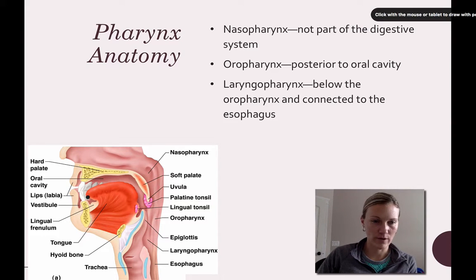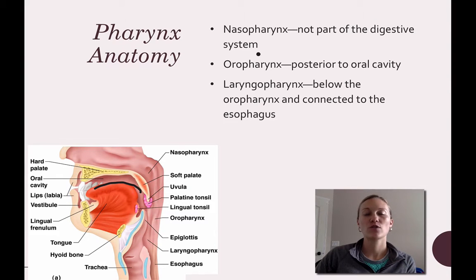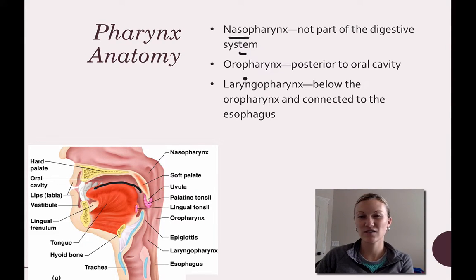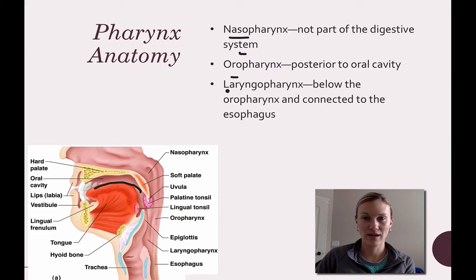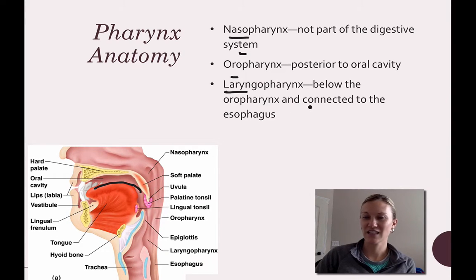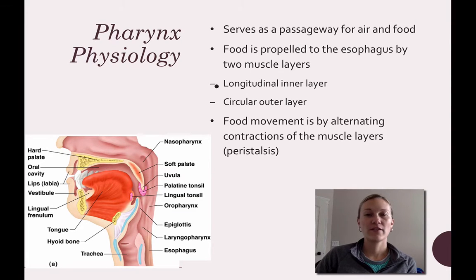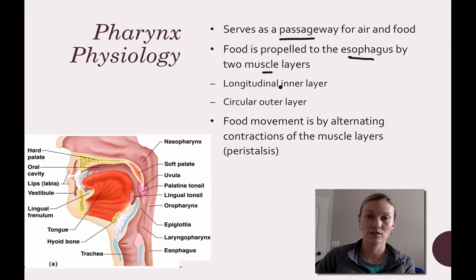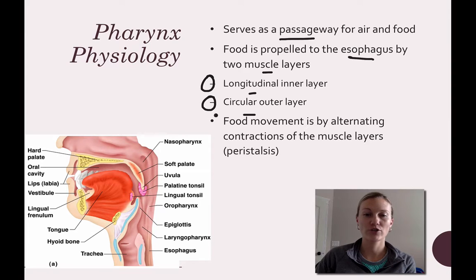Moving on to the pharynx. There are three regions: the nasopharynx, which is closest to your nose and not actually part of the digestive system; the oropharynx, which is posterior to the oral cavity; and the laryngeopharynx, which is below the oropharynx and connected to the esophagus. The pharynx serves as a passageway for food and air. Food is propelled to the esophagus by alternating contractions of the longitudinal and circular muscle layers — a process called peristalsis, the slow rhythmic movement of food.